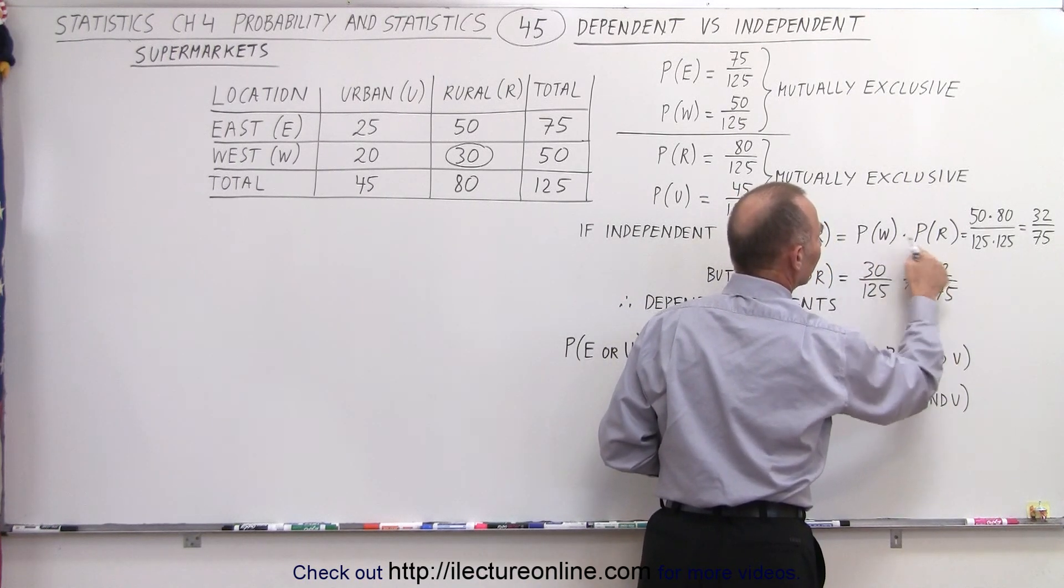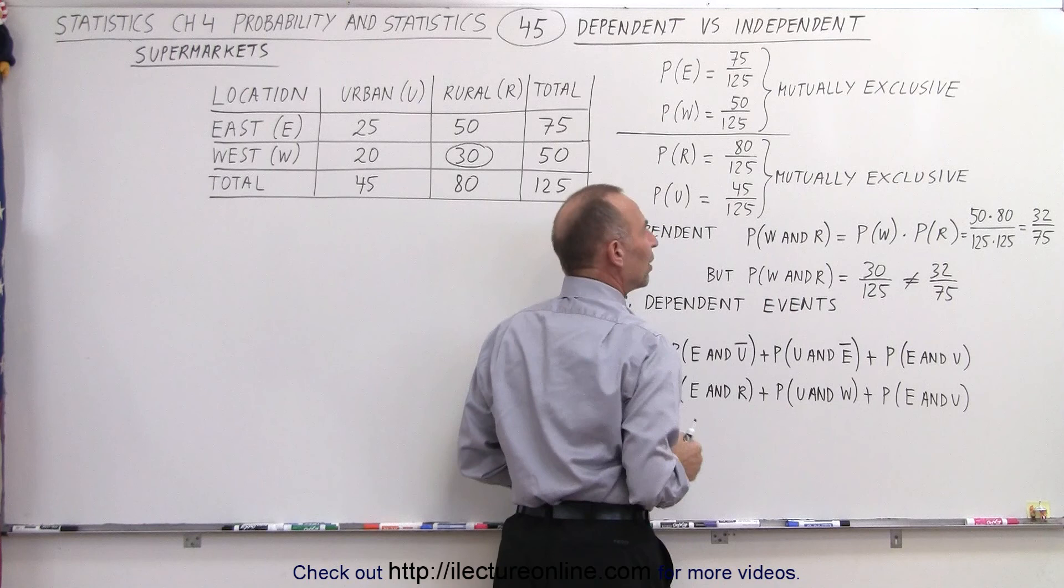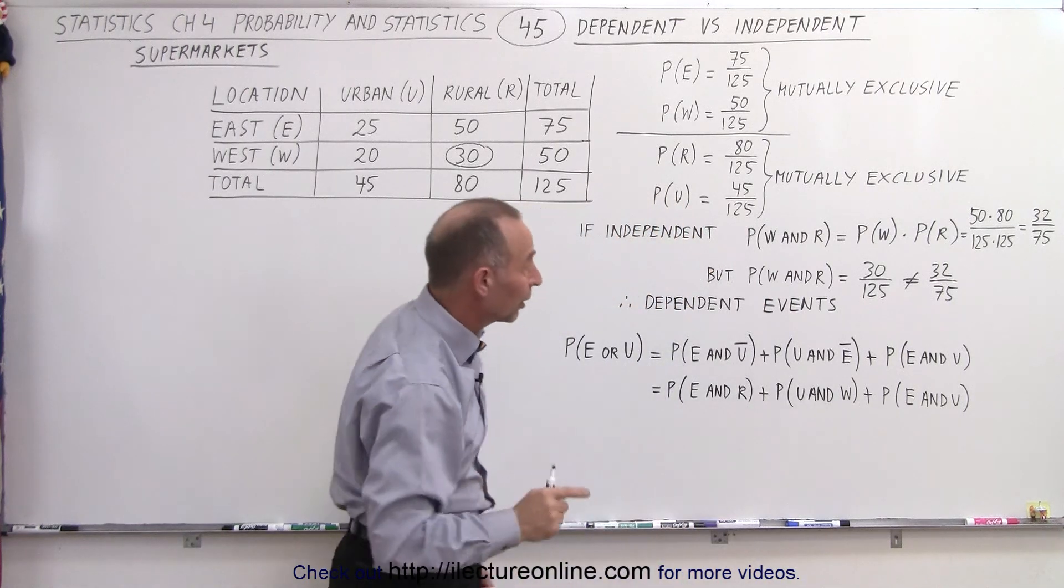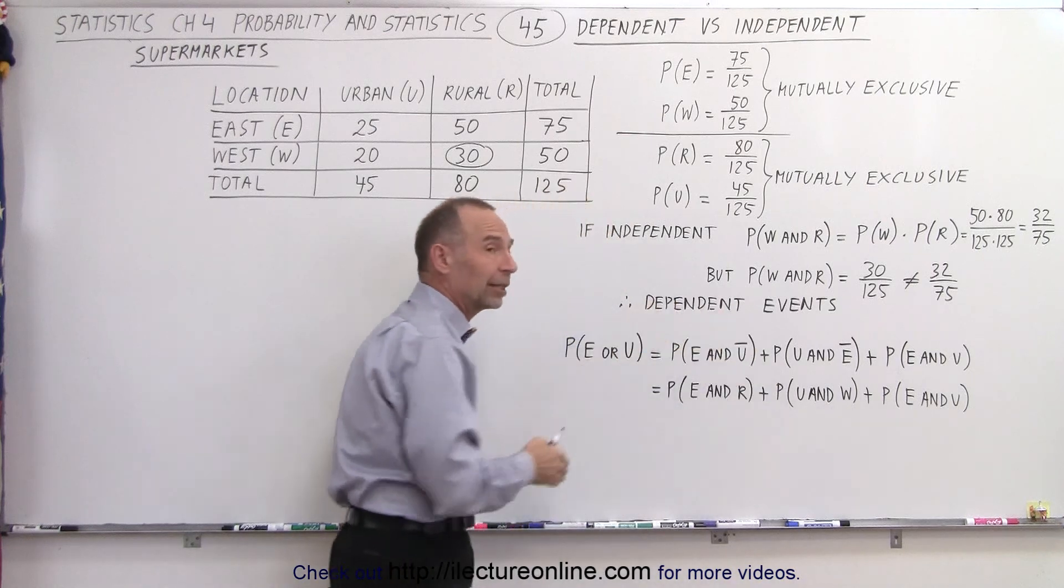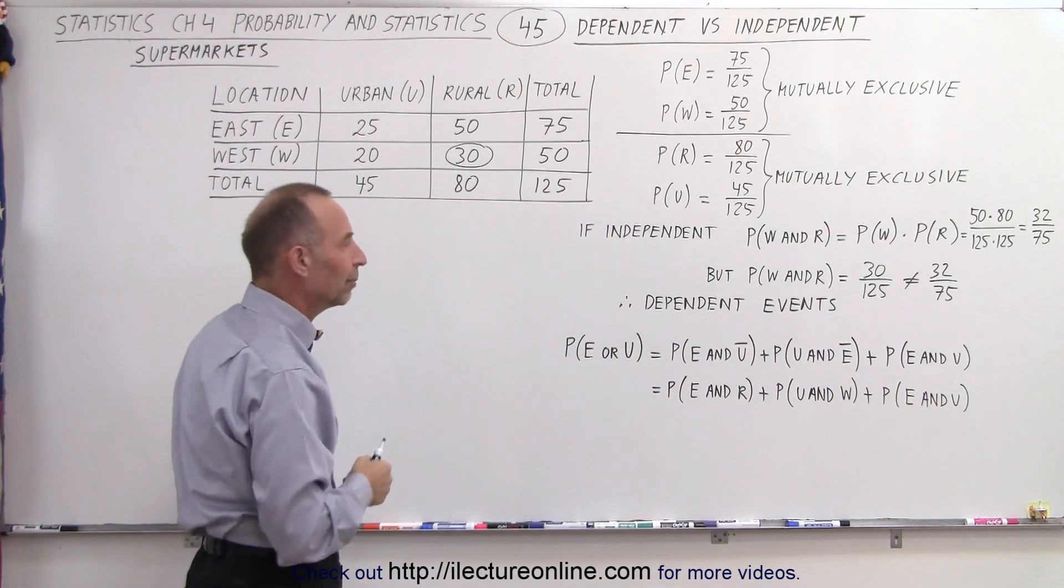So when we multiply these two probabilities together we don't get this situation right here, therefore we can conclude they are dependent events. Once we know the outcome of one it will affect the outcome of the other.